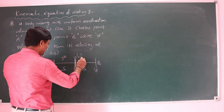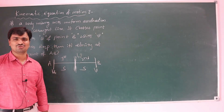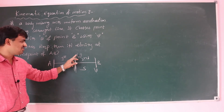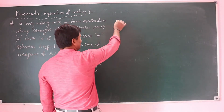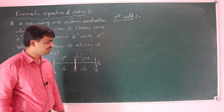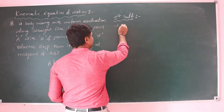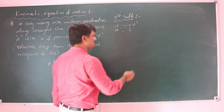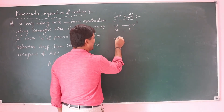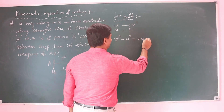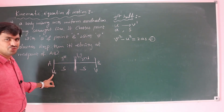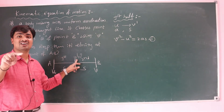In the second half, initial velocity is V dash and final velocity is V. For the first half: initial velocity u, final velocity V dash. Applying the equation of motion: V dash² minus u² equals 2as. Take this as equation 1.